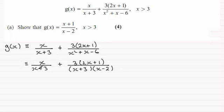So all I need to do is have my denominator then as x plus 3 times x minus 2. So what I'm going to do is times top and bottom of this fraction here by x minus 2 over x minus 2.